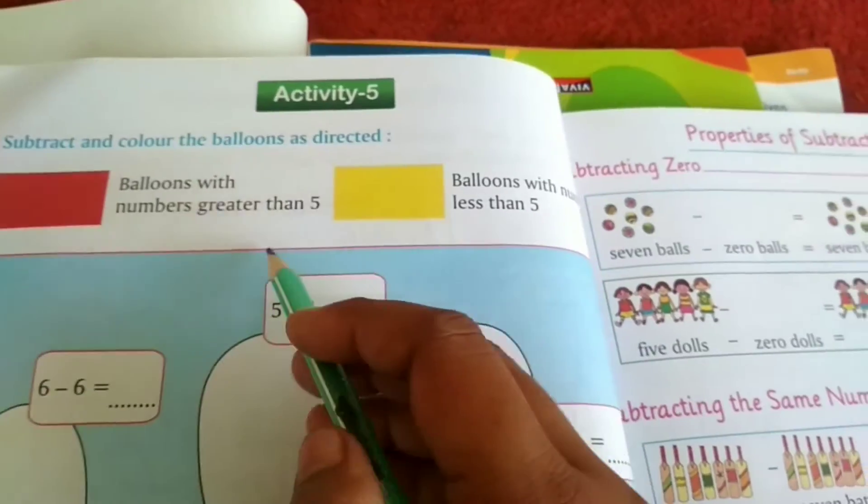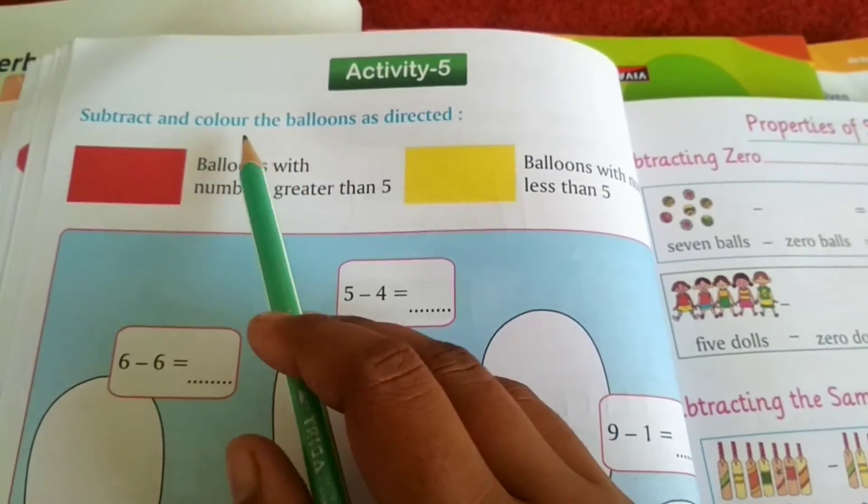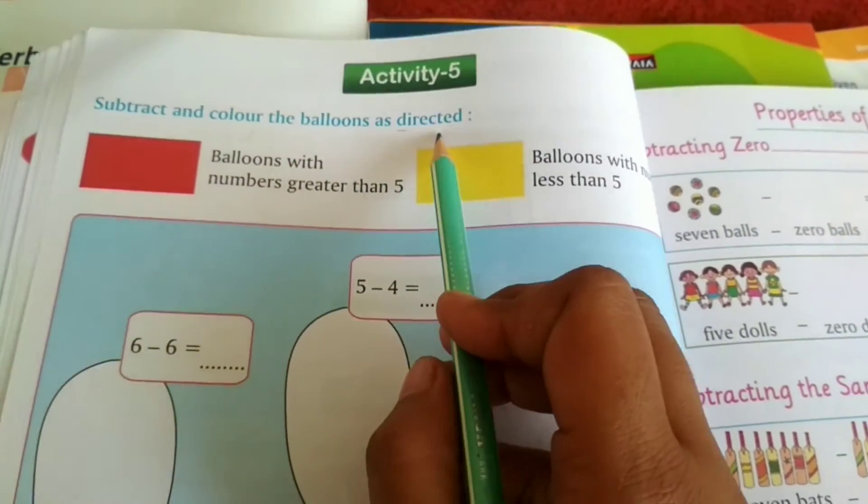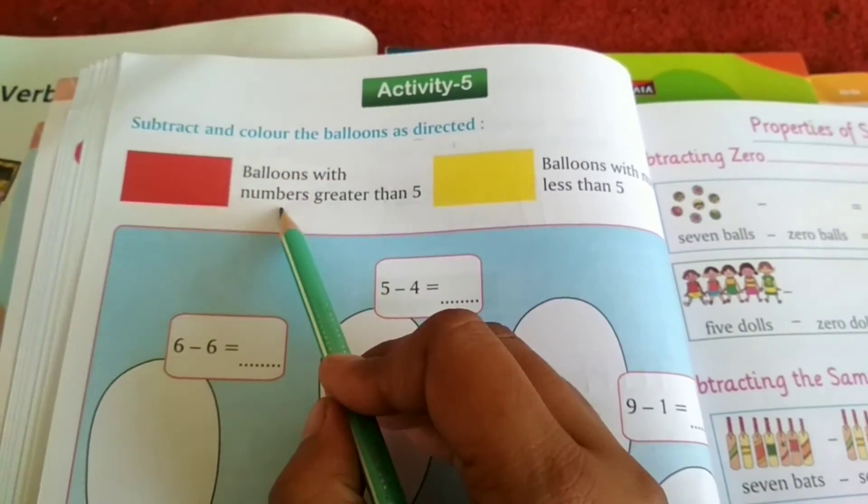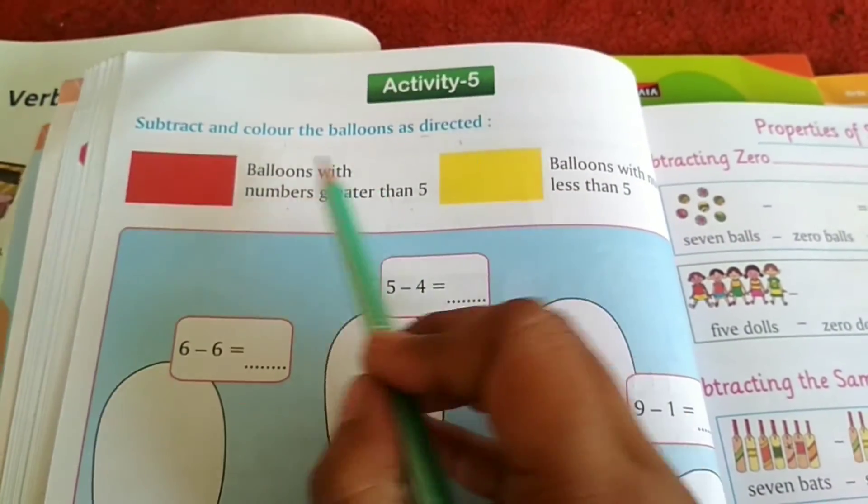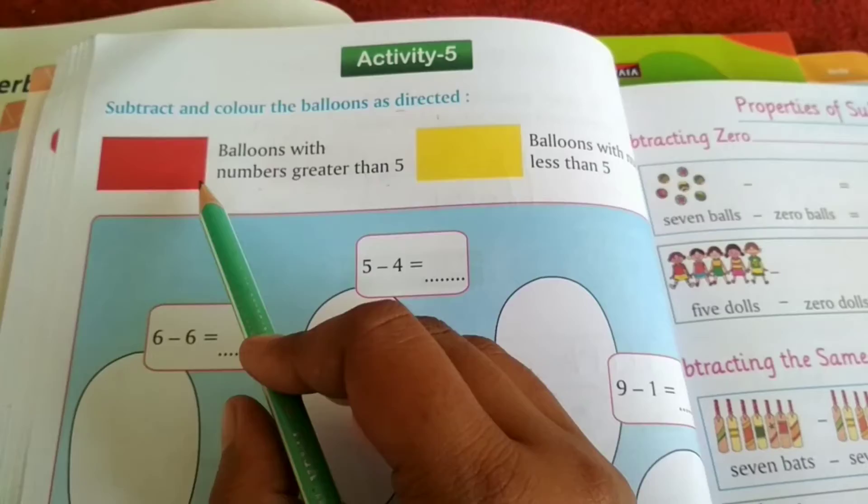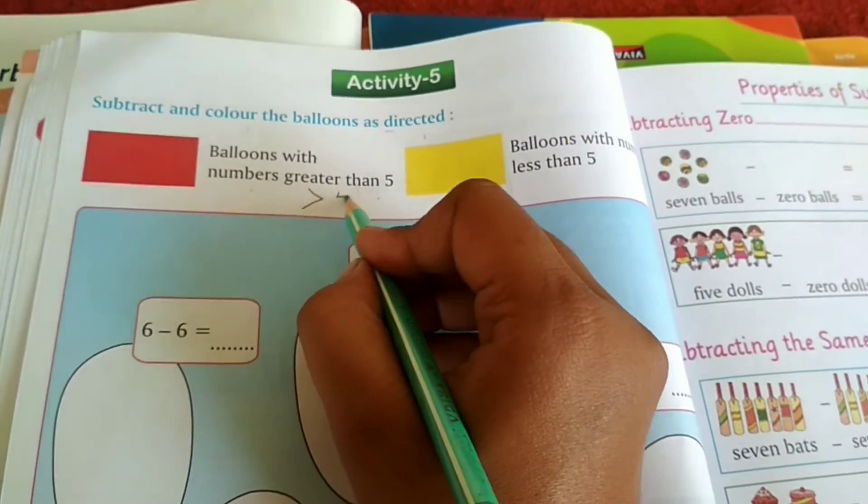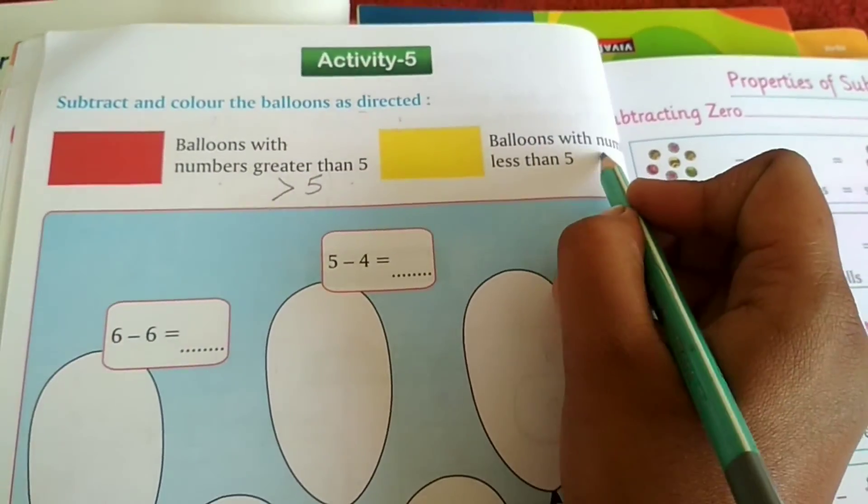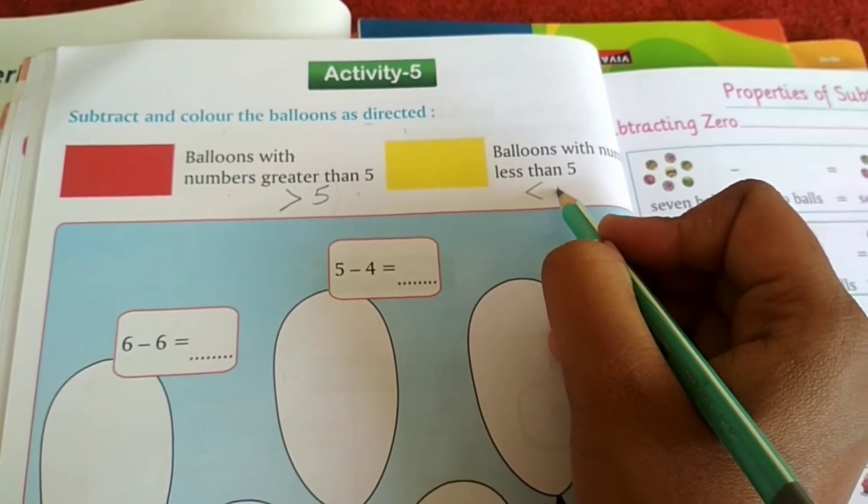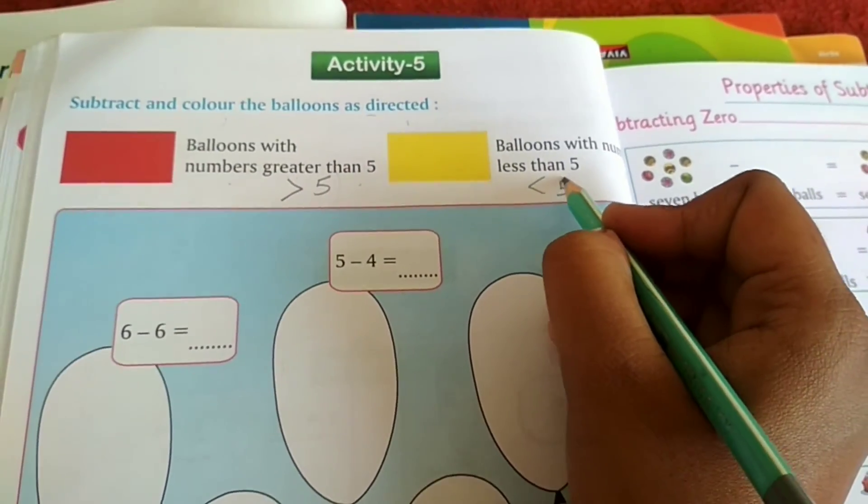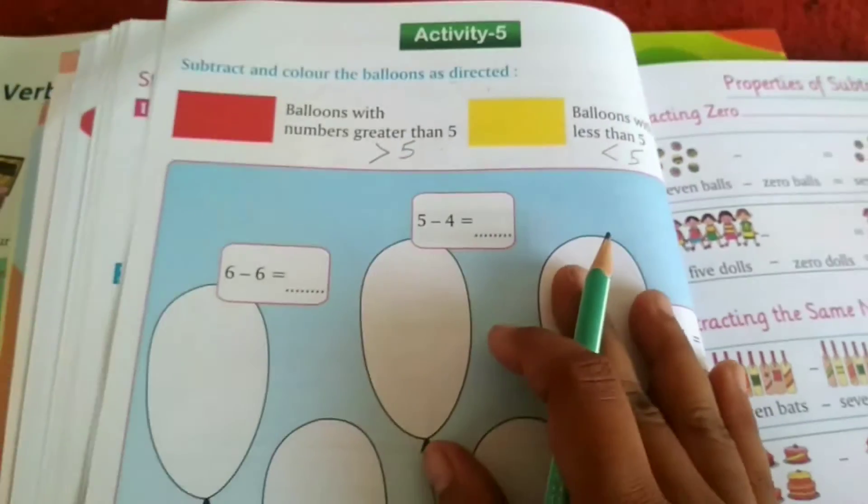So you will have to do the list. Balloon with number 5 and greater than 5 will be red color. And balloon with number less than 5 is yellow color.